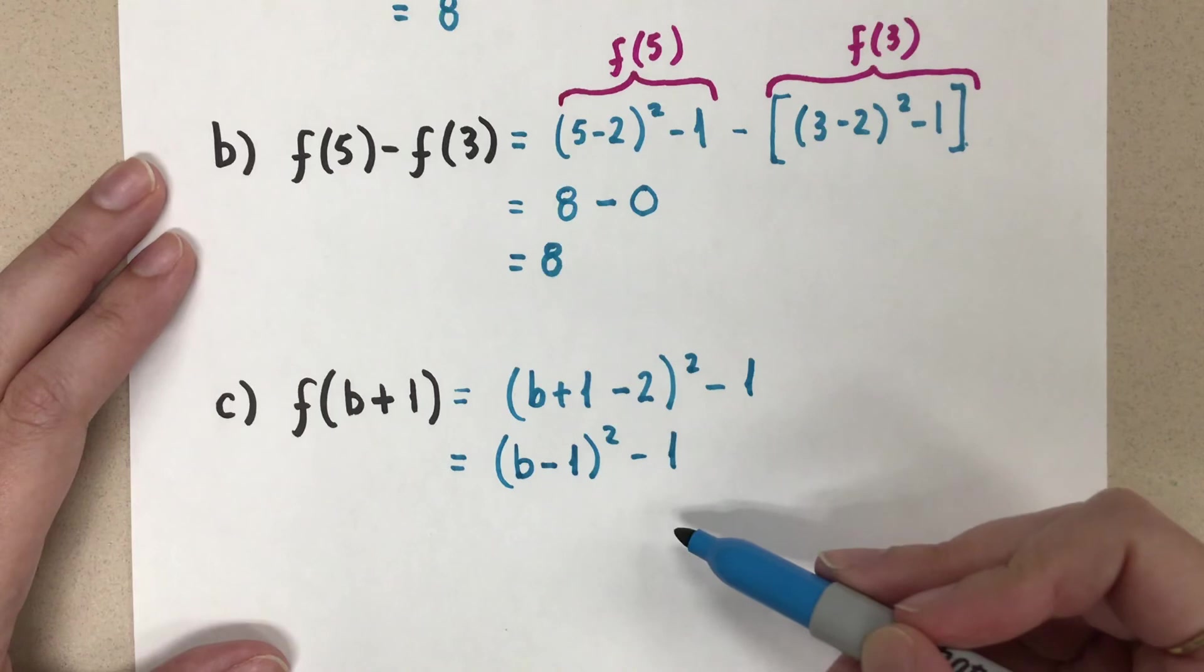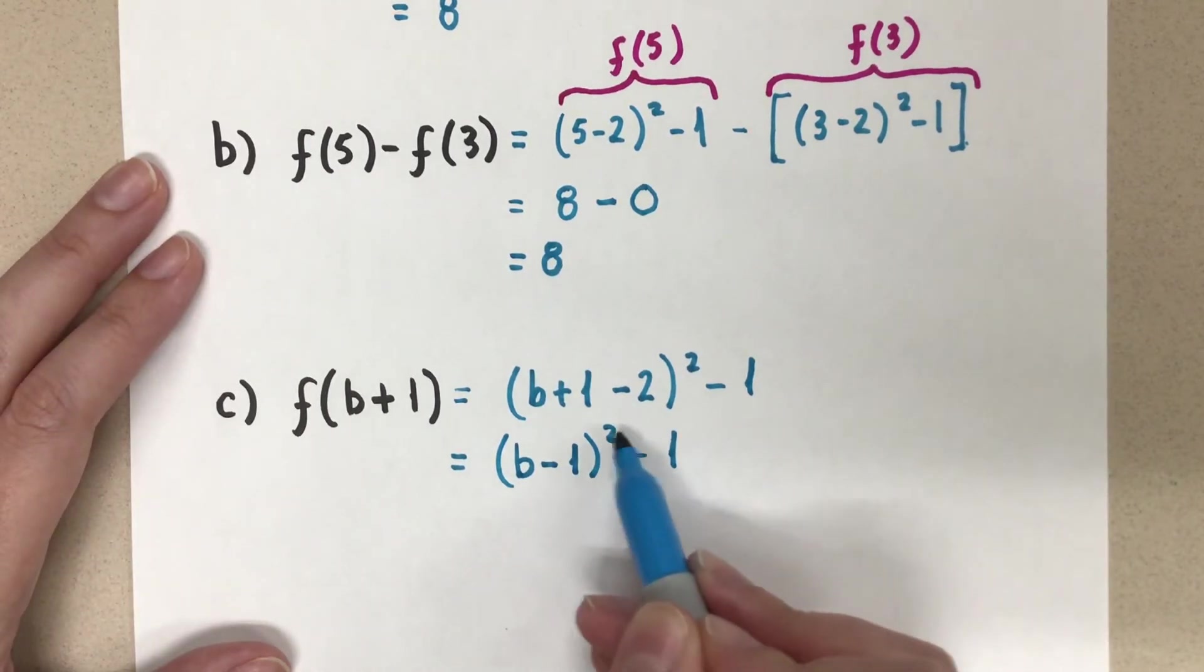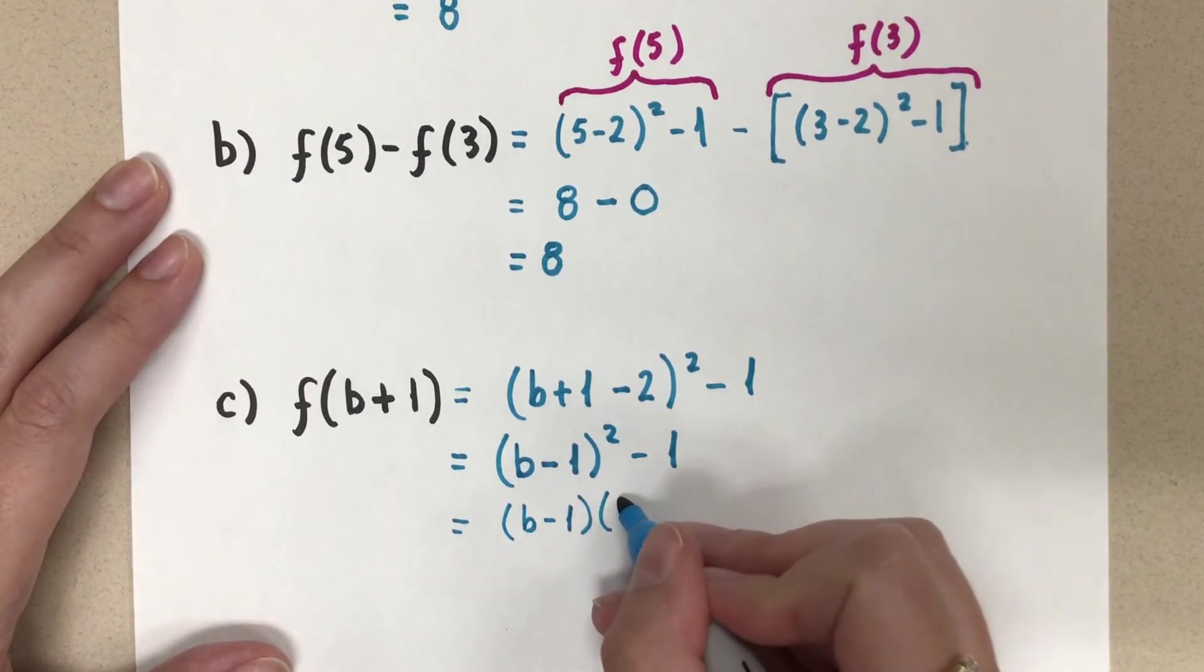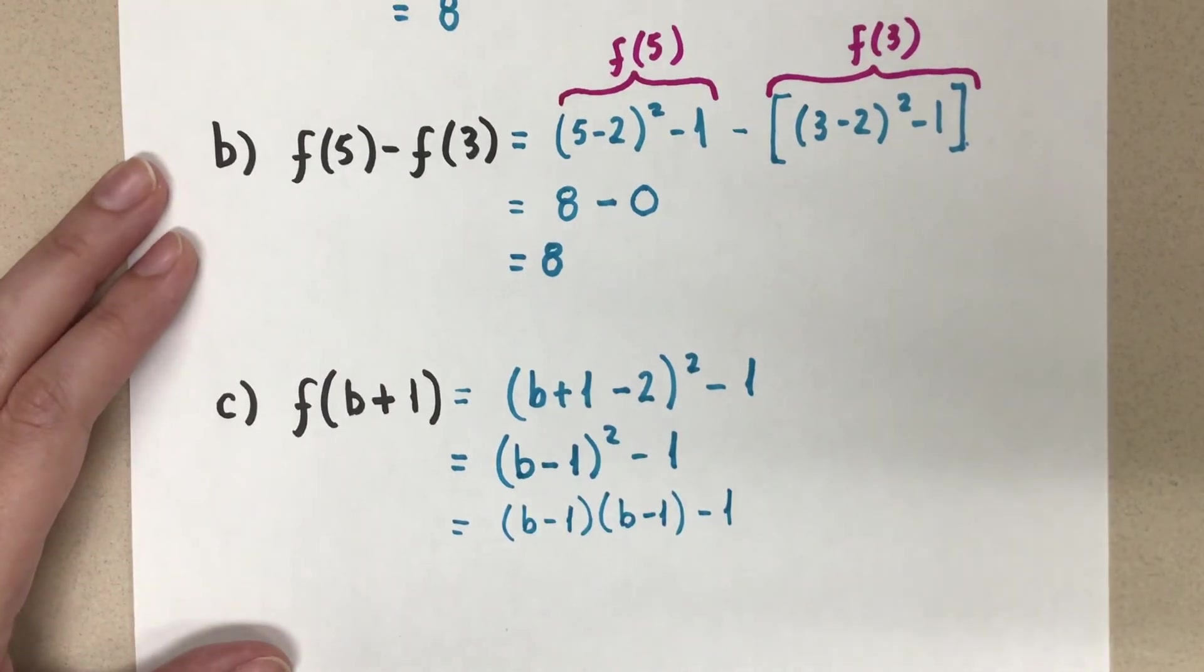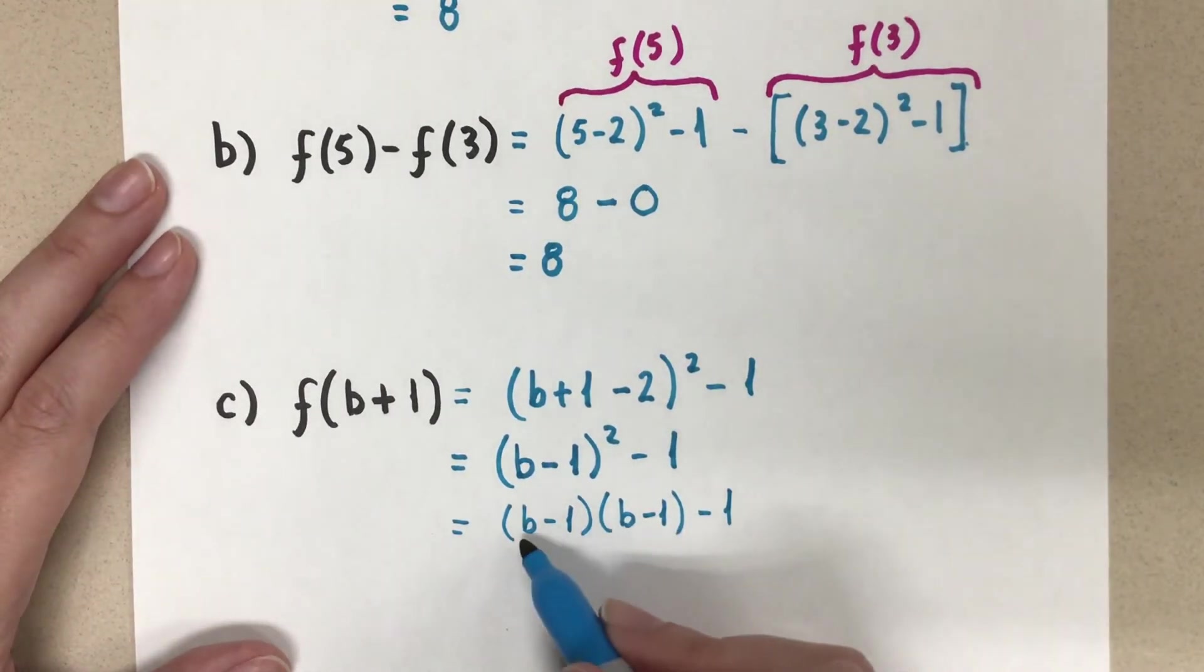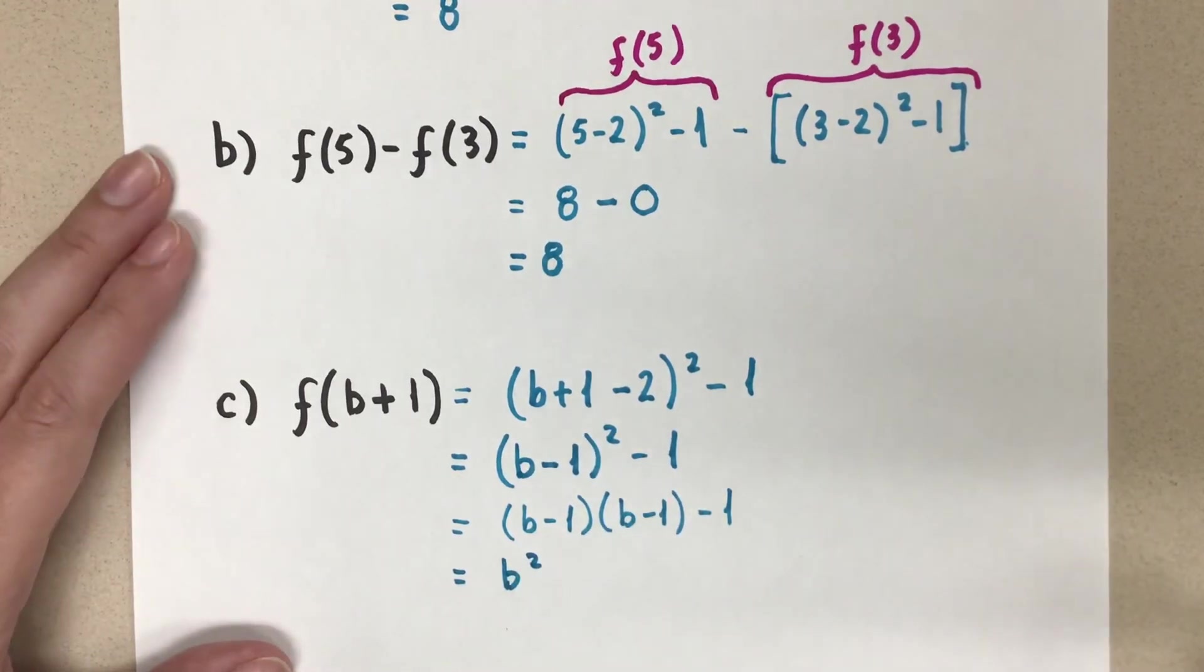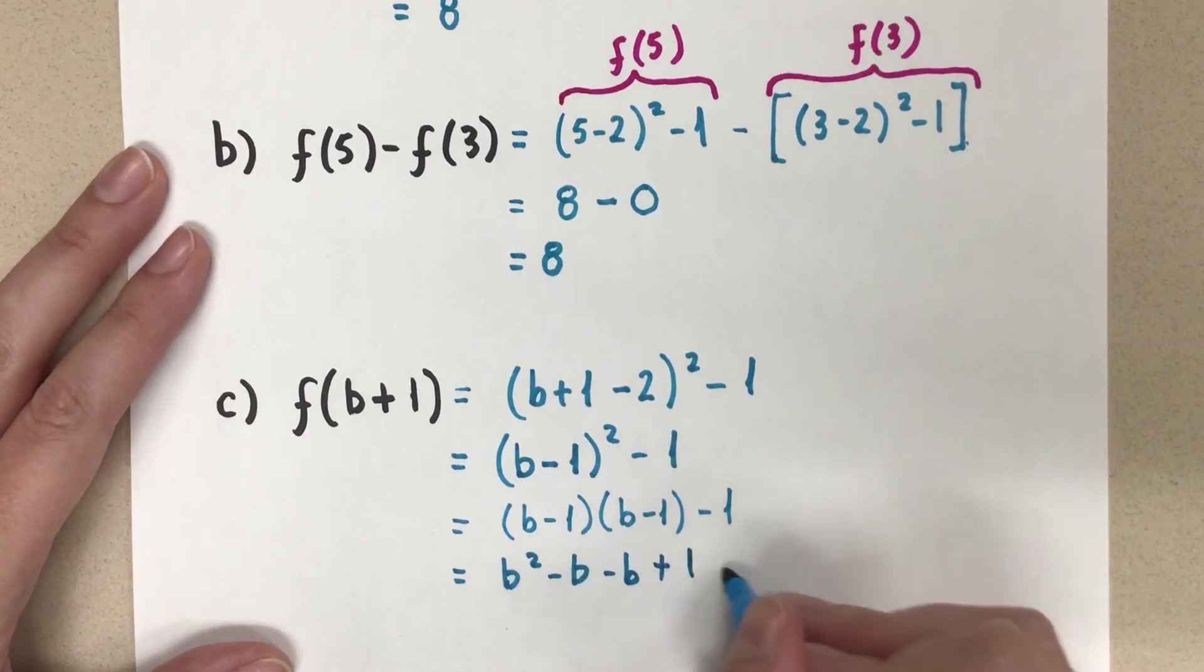If you want to simplify further, remember that this is b minus 1 all squared. So just be careful that you're expanding the binomial times a binomial carefully here and properly. So we would do this, and then we would expand b times b. I'm going to work it out for you, just in case we want to see how it goes. So b times b was b squared. b times negative 1 is minus b. And negative 1 times b is minus b again. And then negative 1 times negative 1 is plus 1. And then we have minus 1.